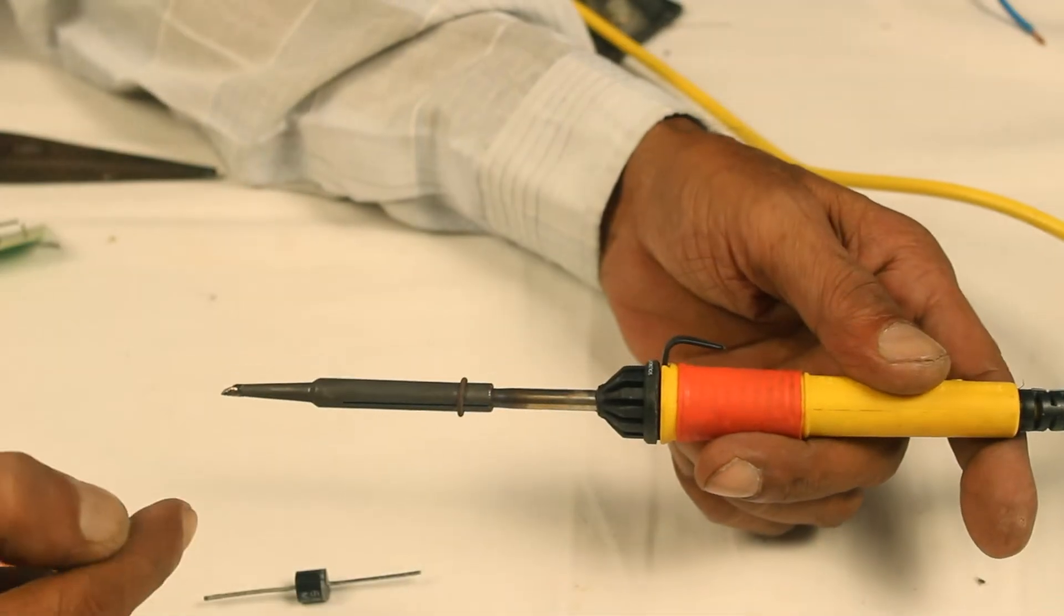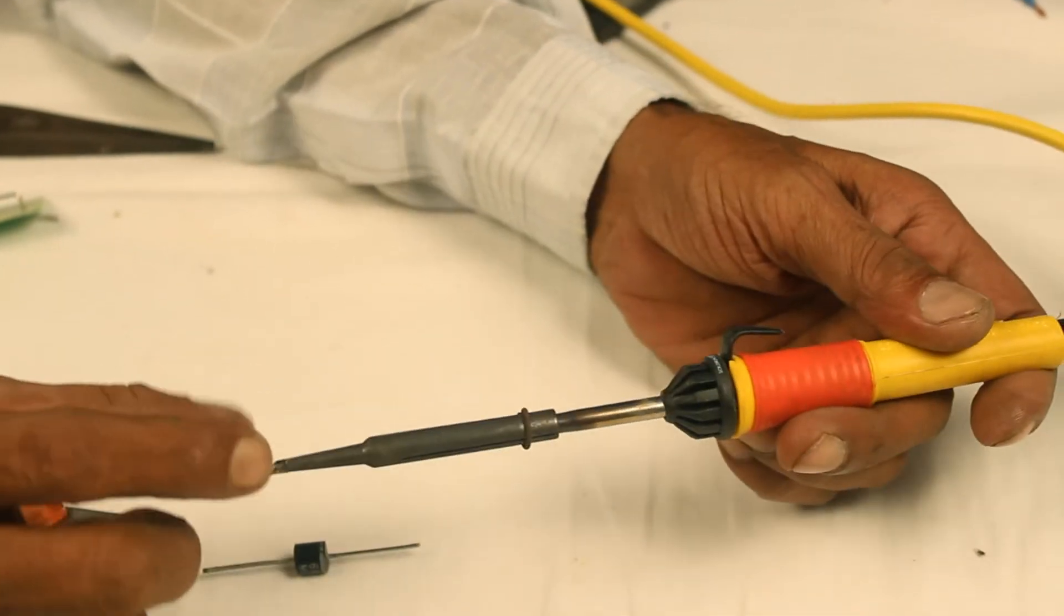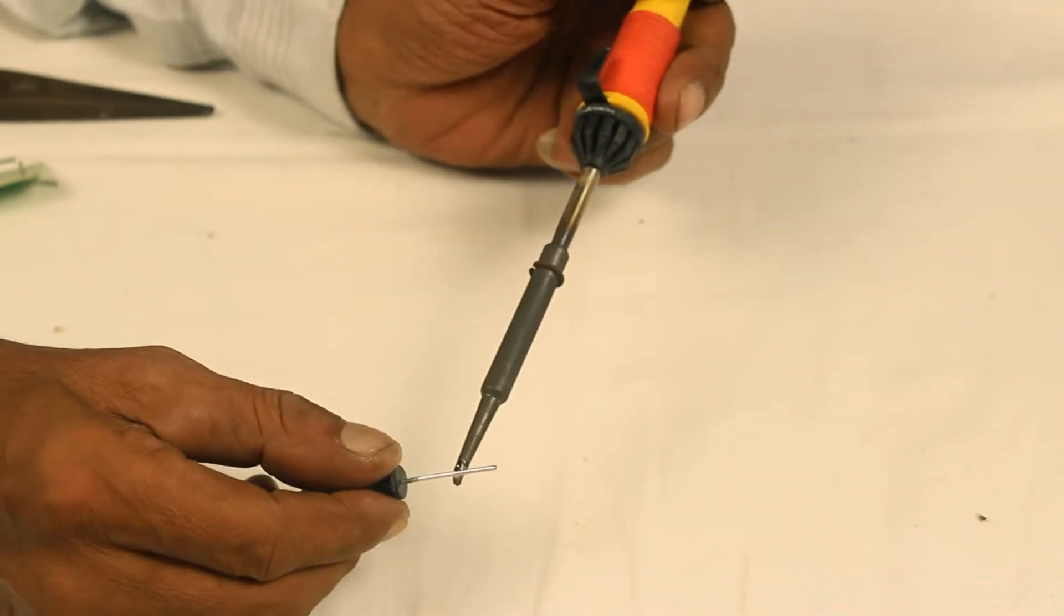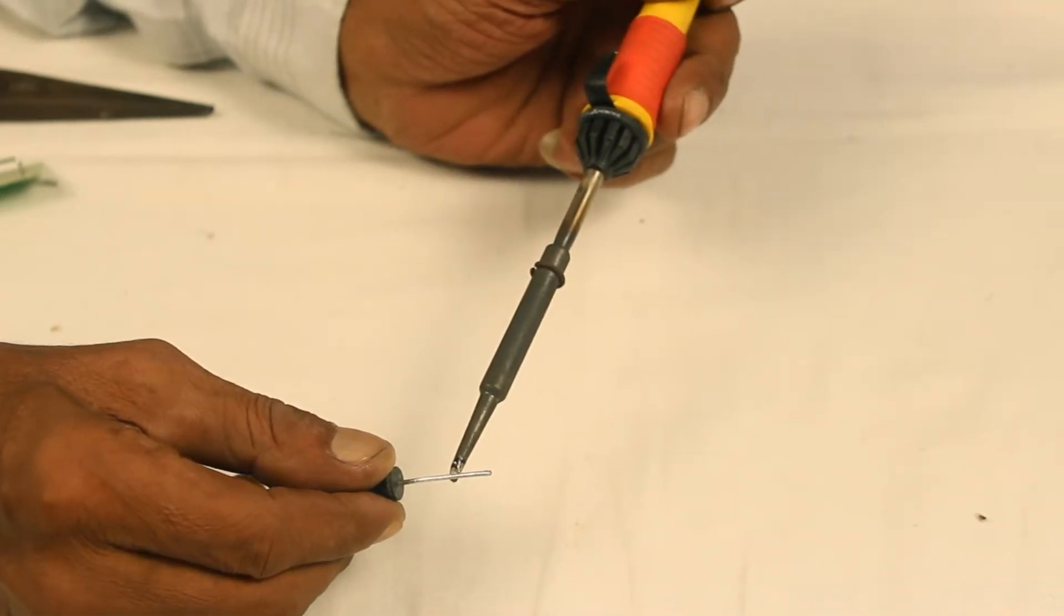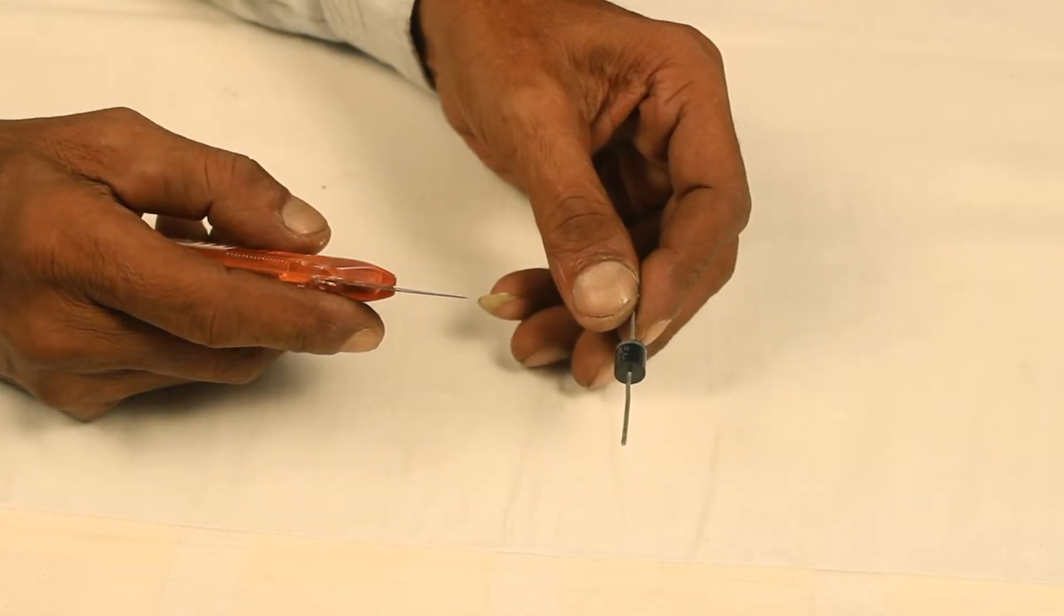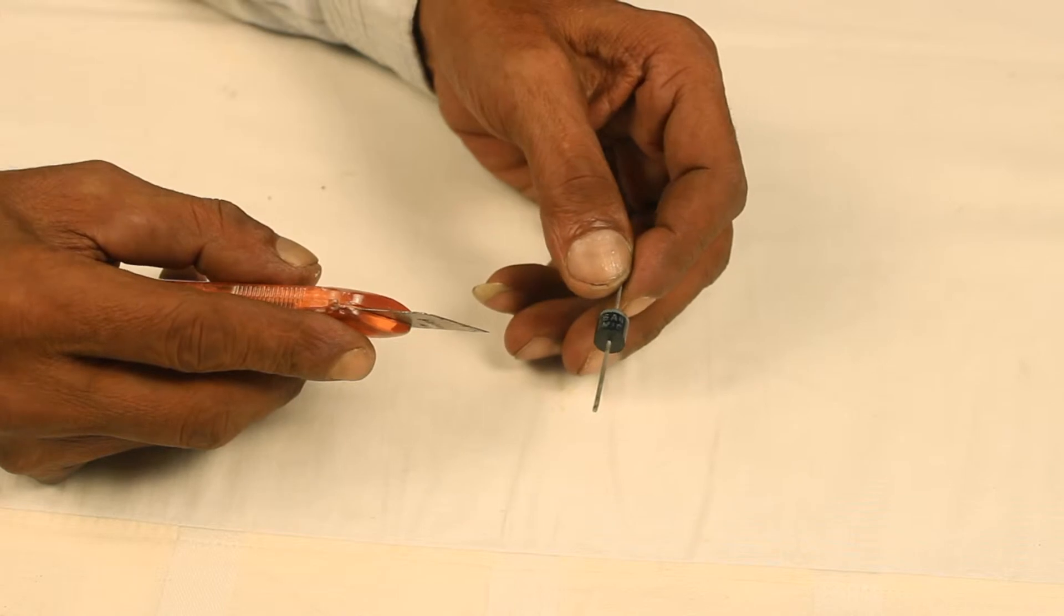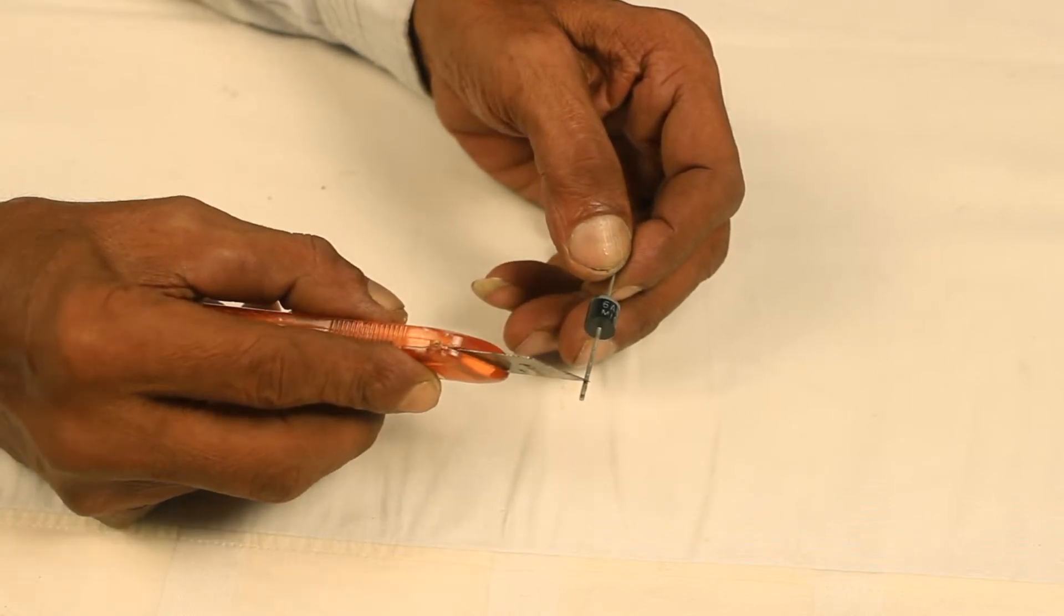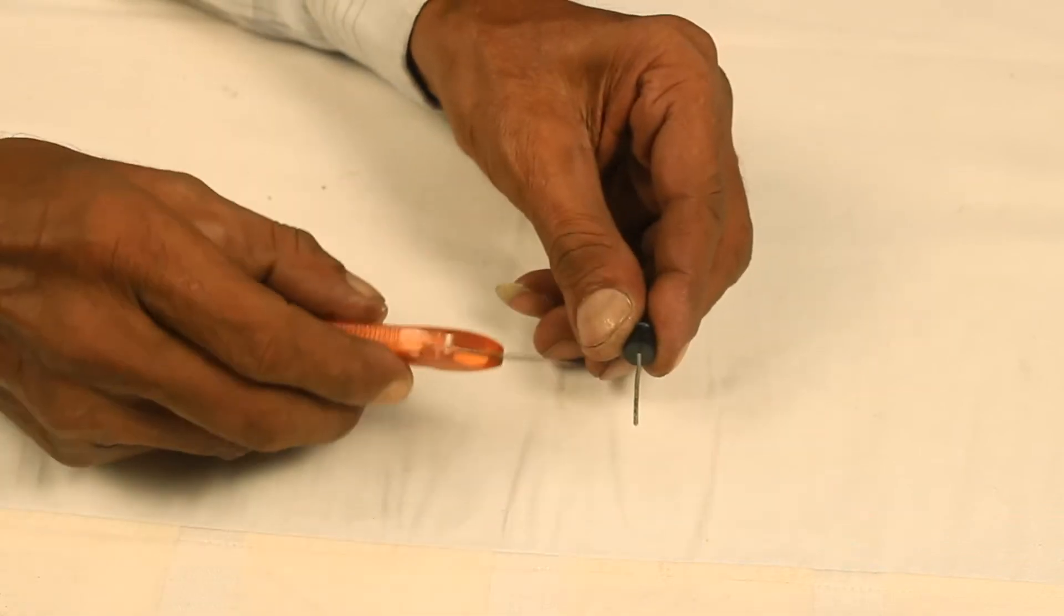The soldering iron basically is a copper tipped heater. It is used to melt solder to facilitate a good joint between components. All components that have to be soldered together should have absolutely clean, shiny leads. If the leads are not clean, they have to be scraped clean.